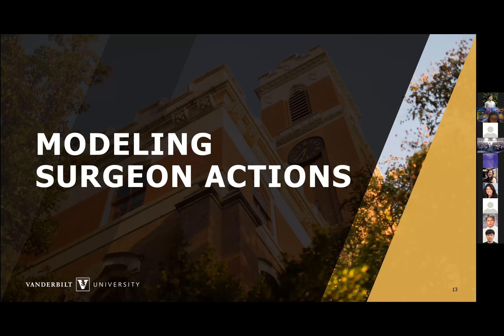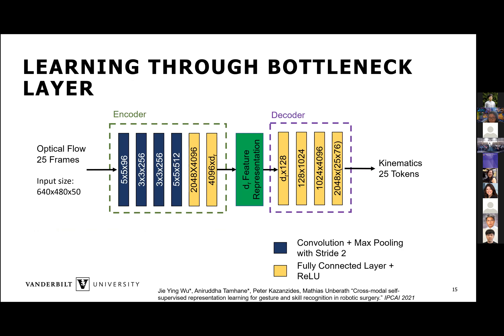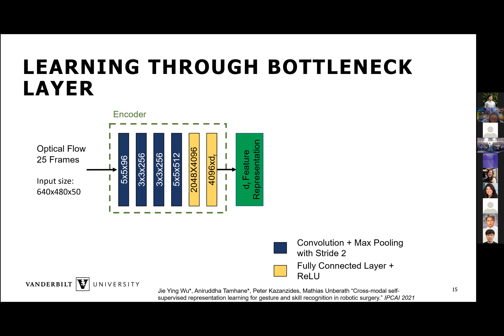The next step is to model the surgeon's actions. Previously, the work I've done on this is to take a phantom dataset and learn embeddings of the gestures. The embeddings we focused on are what we can learn through an encoder-decoder structure. We didn't want to use any labels — we fed the optical flow through this encoder structure where it passes through a bottleneck layer. The bottleneck layer information then goes on to be decoded to reconstruct the kinematics.